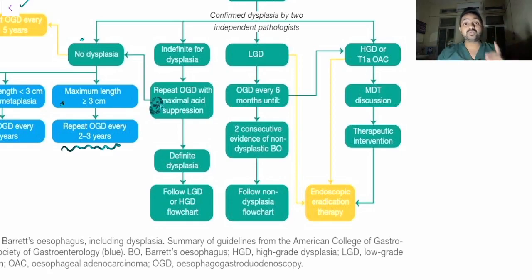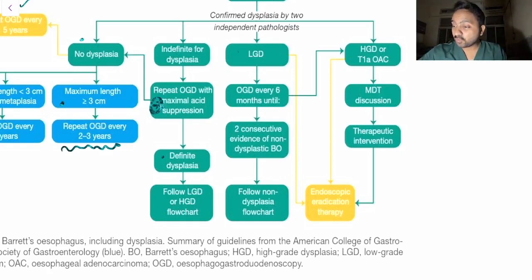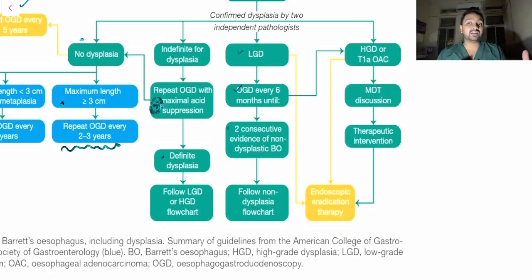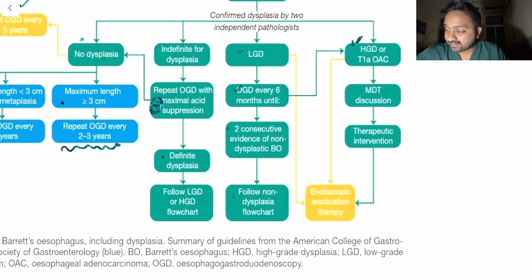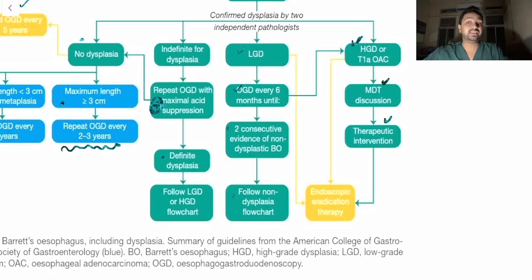If indefinite for dysplasia, repeat OGD with maximal acid suppression — this is an important concept. If definite dysplasia, follow the chart for low grade or high grade. For low grade dysplasia, OGD every 6 months; if two consecutive non-dysplastic findings, follow the non-dysplasia flowchart. For high grade dysplasia, MDT discussion is required, with therapeutic intervention such as endoscopic eradication therapy.